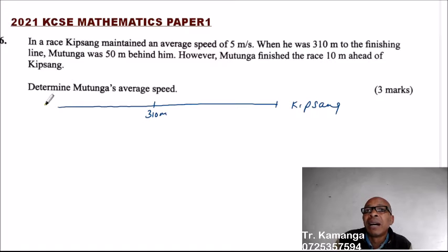Then we have Mutunga. This is the finishing line. So at 310, so this is 310, Mutunga was 50 meters behind Kipsang.